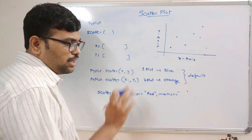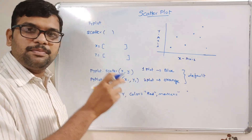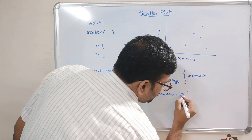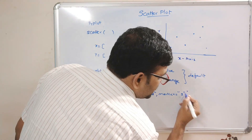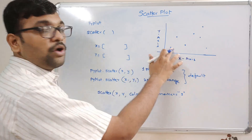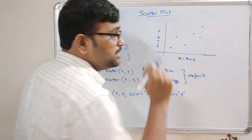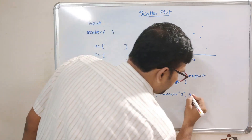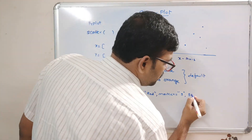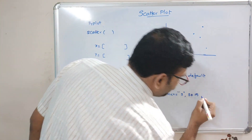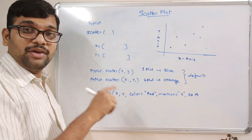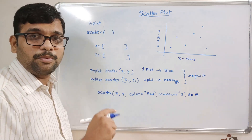I'll post the markers concept link in the description section so you can refer to that. If I represent 's', the representation will be in terms of squares instead of points. We can also increase the size of the marker using the 's' operator - the size parameter increases the marker size in the plot.